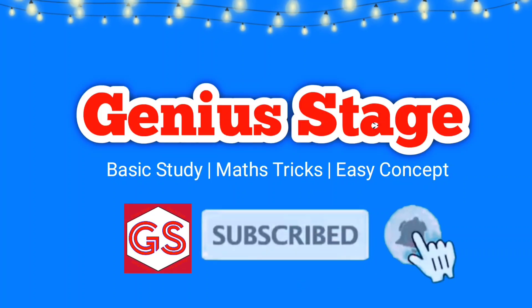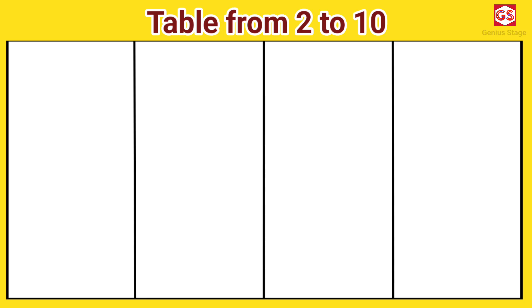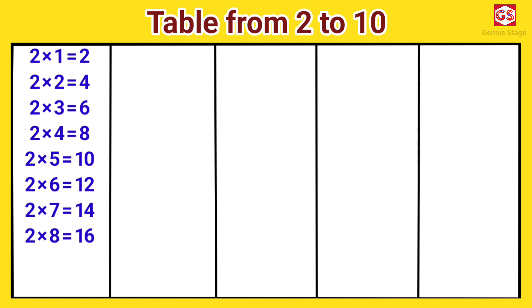Welcome to Genius Stage. Table from 2 to 10. 2 ones are 2. 2 twos are 4. 2 threes are 6. 2 fours are 8. 2 fives are 10. 2 sixes are 12. 2 sevens are 14. 2 eights are